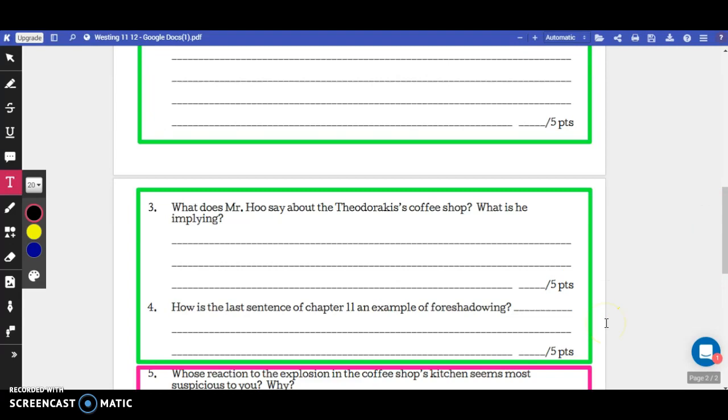And number 4 is, how is the last sentence of chapter 11 an example of foreshadowing?